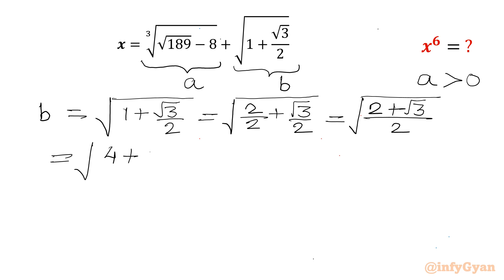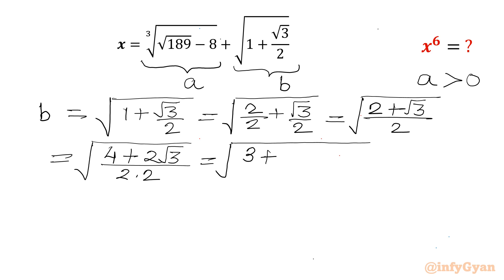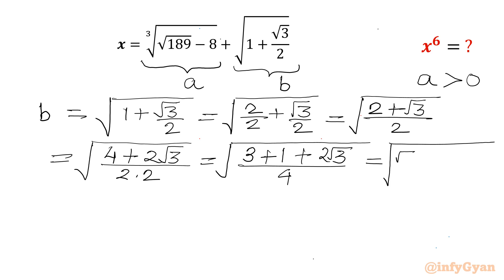Further I can multiply numerator and denominator by 2. So I can write (4 plus 2 root 3) and the denominator will be 2 times 2, which is 4. Now I can split 4 as 3 plus 1, so we get (3 plus 1 plus 2 root 3) divided by 4.